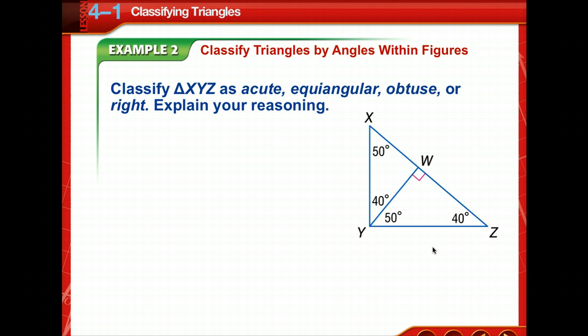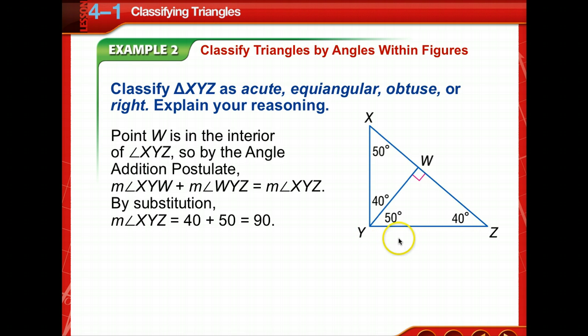Now, we're going to classify triangles by angles within figures. So, we're asked to classify triangle XYZ as acute, equilangular, obtuse, or right, and explain our reasoning. Point W is in the interior of angle XYZ. So, the angle addition postulate, the measure of angle XYW plus WYZ is equal to XYZ. So, by substitution, the measure of angle XYZ is 40 plus 50, or 90. So, it is a right triangle. See, it's pretty easy to figure out it's a right, but coming out with explaining your reasoning, that's where you need to stop and recall other lessons that we've had.